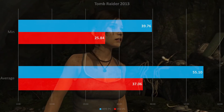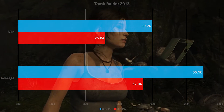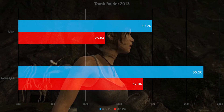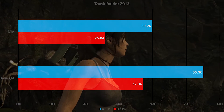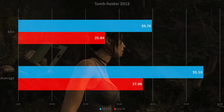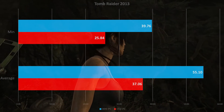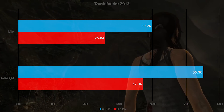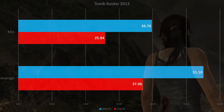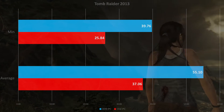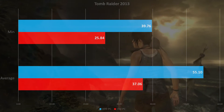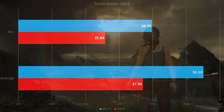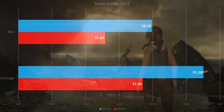Tomb Raider — once again the same story: 55 FPS on the new rig, 37 on the old. There was no CPU bottleneck on either system and the usage was pretty low. You really don't need more than a 4-core CPU if you're primarily gaming.